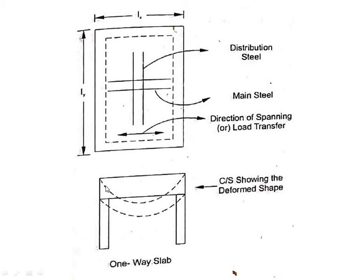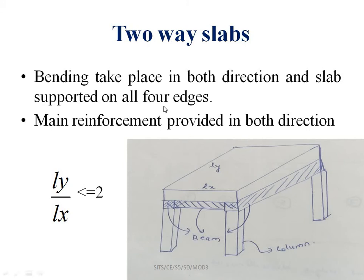For a two-way slab, the bending takes place in both directions, and the slab is supported on four edges. The condition is LY by LX less than or equal to 2.